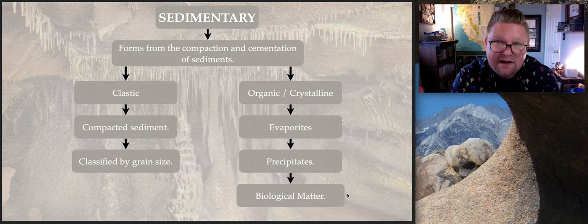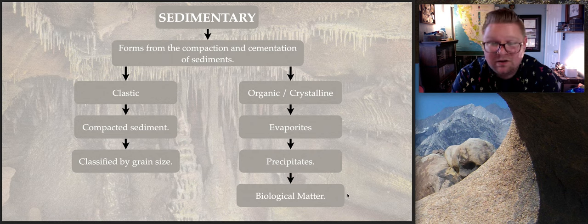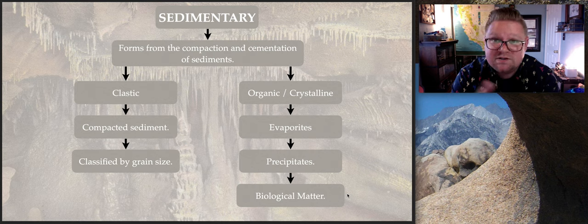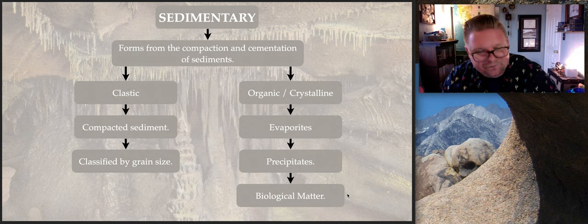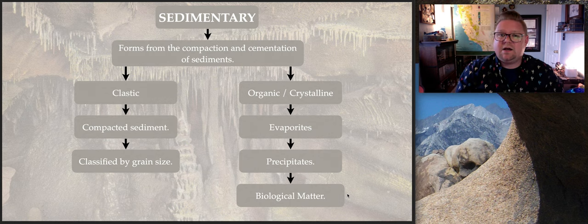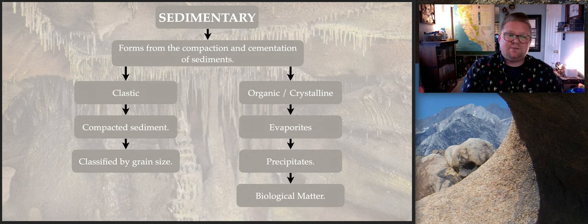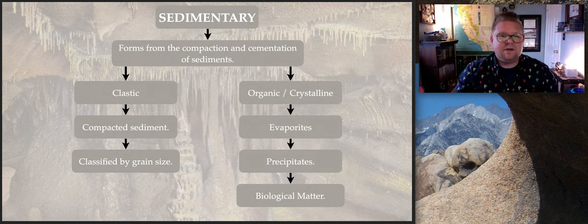Fossilized coprolite can reveal things like corn in it, so we know corn was available as agriculture during that time period. That's the only time we see fossils — in sedimentary rocks — mostly because there's no fire or pressure involved that would destroy them. So we have clastic versus organic and crystalline sedimentary rocks.